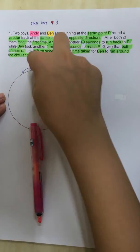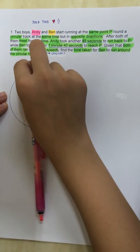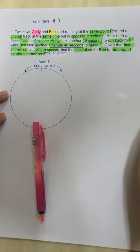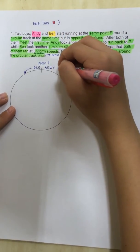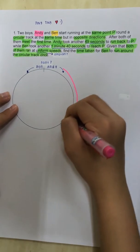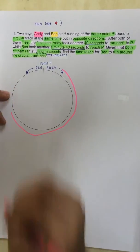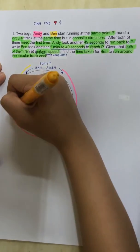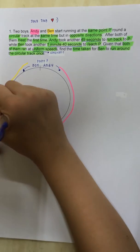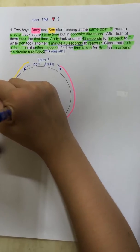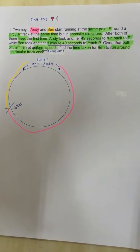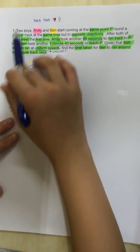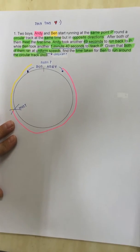Ben can run clockwise too and Andy can run anticlockwise too, but I will be doing the first one. So, Andy, pink color, ran and stopped when they met. Ben ran and met. They met here. So, when they meet,